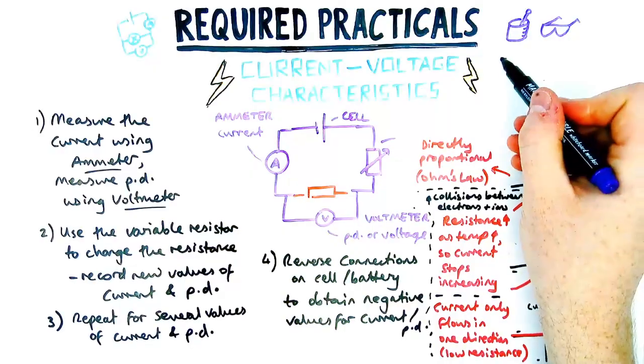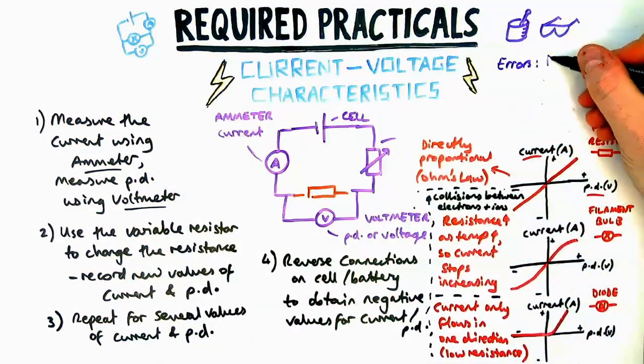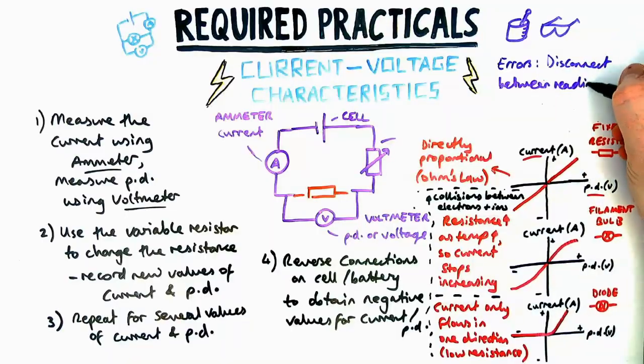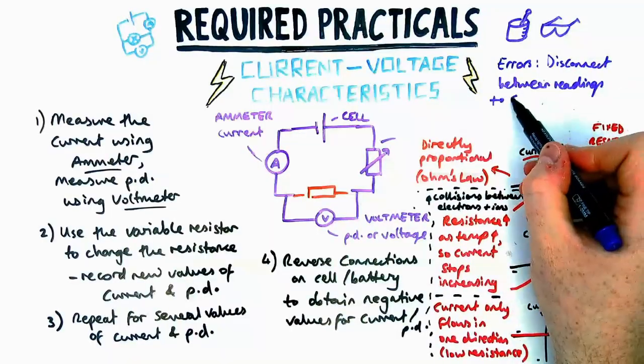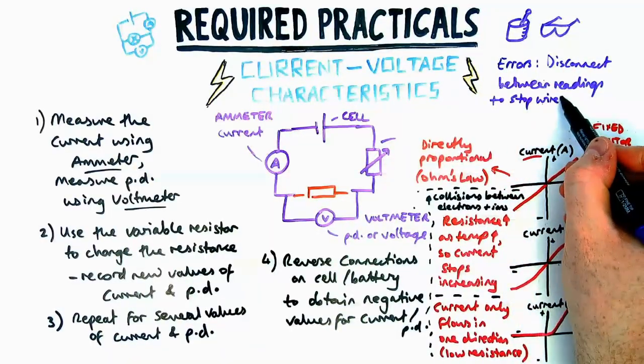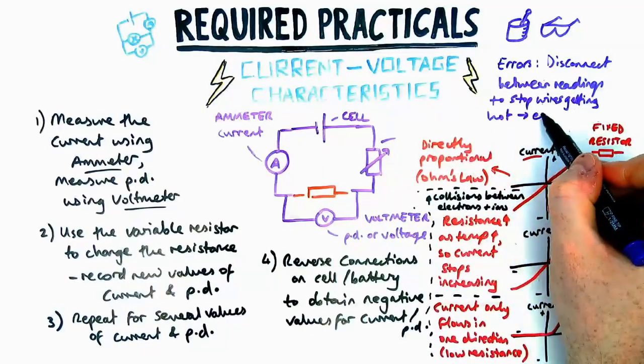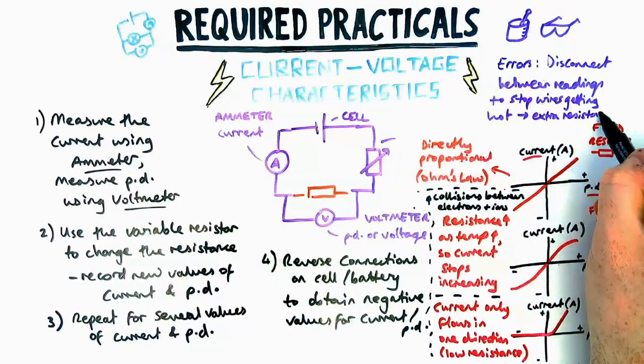There's not that many errors or safety issues with this practical, but you could mention about disconnecting between readings to stop the wires getting hot. If the wires got too hot or the voltage was too high, it means there's some extra resistance which you don't want.